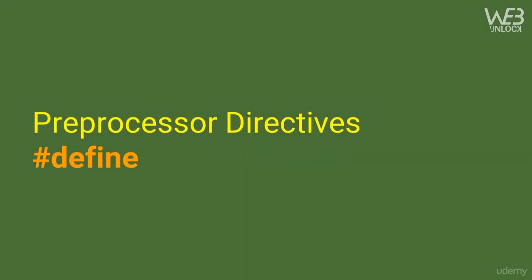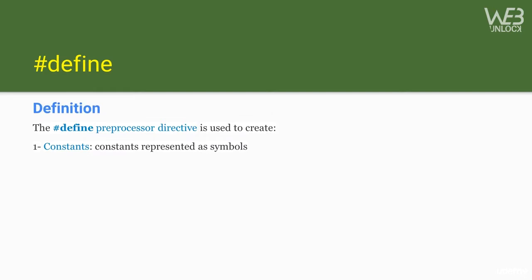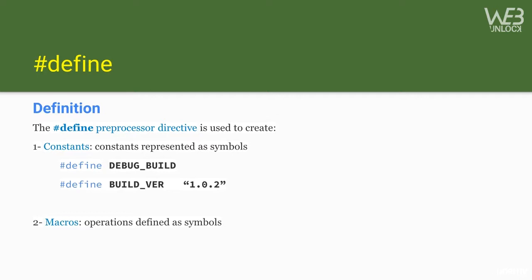The #define preprocessor directive is used to create symbolic constants or macros. An example of a symbolic constant is #define DEBUG_BUILD — this defines a new symbol known to the preprocessor without giving it a value. Another example: #define BUILD_VERSION 100 — this becomes another name for that value, like a synonym. Wherever BUILD_VERSION appears, the preprocessor replaces it with that value before compilation starts.